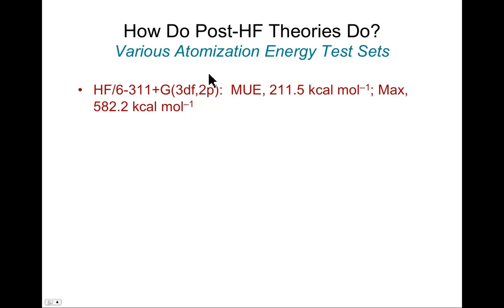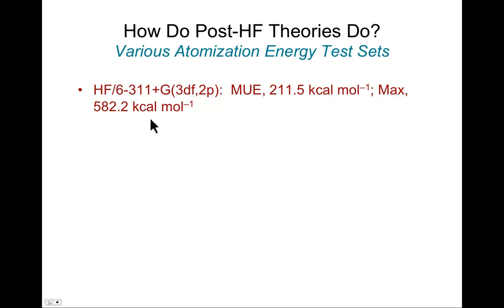Here's the Hartree-Fock model with a decent basis set, 6-311+G(3df,2p): six primitives in the core, split valence and triple split valence, three primitives in the tightest function, one function in the middle, one function that's loose, diffuse functions, three D functions on heavy atoms, one F function, and two P functions on light atoms. Mean unsigned error on a fairly large test set: 211.5 kcal/mol, largest error 582.2 kcal/mol. Those are huge, enormous errors associated with the Hartree-Fock level — there's no electron correlation there.